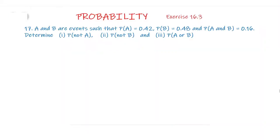A and B are events such that P(A) = 0.42, P(B) = 0.48, and P(A and B) = 0.16. Determine: Part 1 — P(not A); Part 2 — P(not B); and Part 3 — P(A or B).